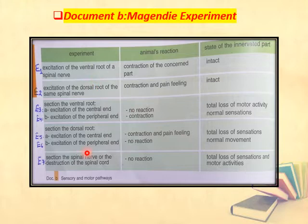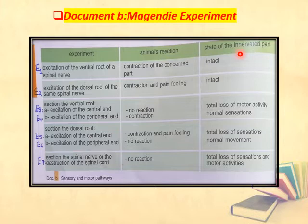In this column we have the experiment. Once Magendie applied the experiment, he observed the animal's reaction and checked the state of the innervated part — the part where he applied the stimulus. He checked whether it was intact, meaning it remains the same, or if something was lost or destroyed.